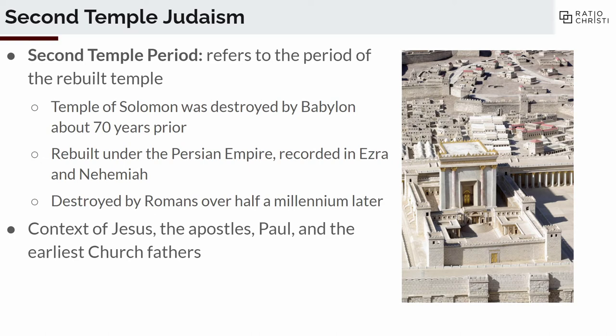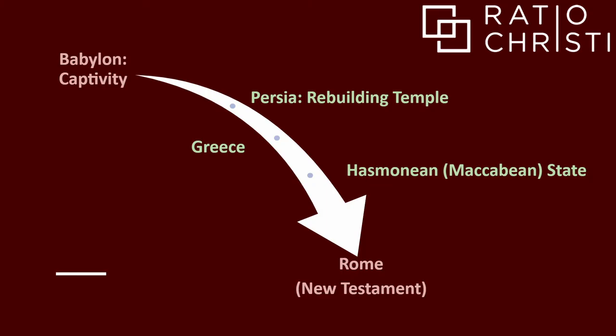This is the context of Jesus, the apostles, Paul, and the earliest church fathers — they lived around the time the Second Temple was standing. It was so significant that in the first century, when the Second Temple was destroyed, people thought it was the end of the world. Because when something has been around for 500 years and is suddenly destroyed, people think it's the end of the world. You see this in first century writings and in the Gospels as well.